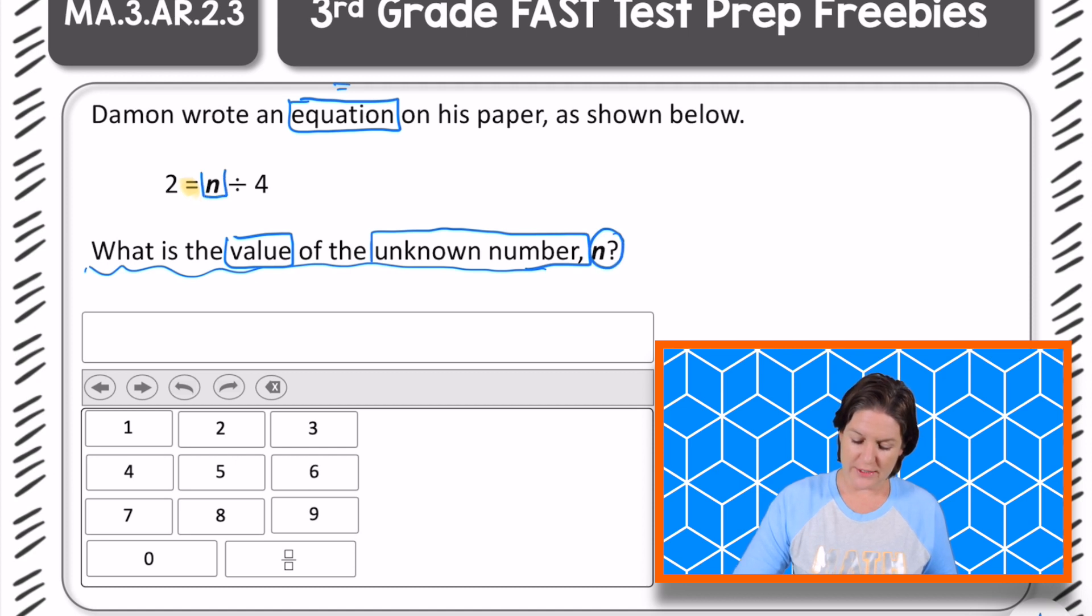So I'm seeing the equation 2 equals n divided by 4. We need to figure out what number n stands for.